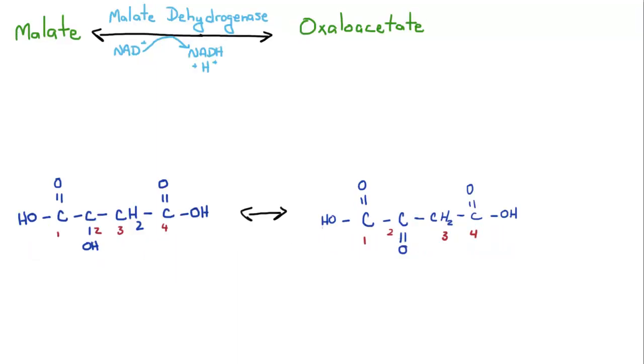And the last step is when malate is oxidized to form oxaloacetate. Again, it's going to reduce NAD to NADH by converting this alcohol or hydroxyl group into a carbonyl group here on the second carbon. So you've got malate to form oxaloacetate.